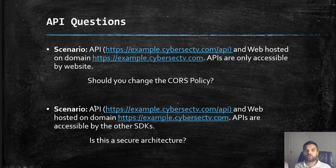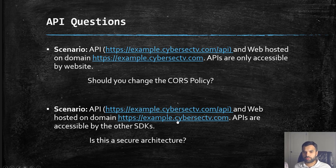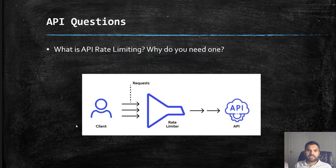The secure architecture in this case is to host the API separately — for example, api.cybersecuritytv.com — and configure the CORS policy for that domain as a wildcard star so any SDKs can call it. If you know specific domains, you can whitelist those. Then you lock down the CORS policy for the website domain separately. That would be a much more secure architecture. Rule out multiple options and identify the most secure one. You need solid fundamentals on CORS, SOP, cookie attributes, and SameSite.